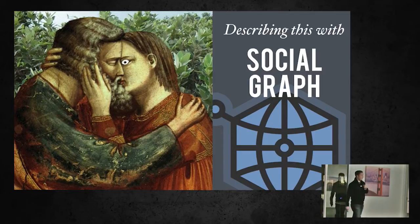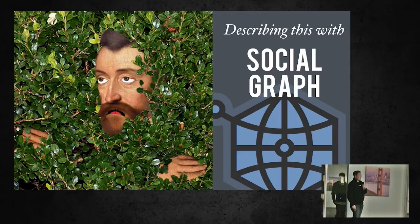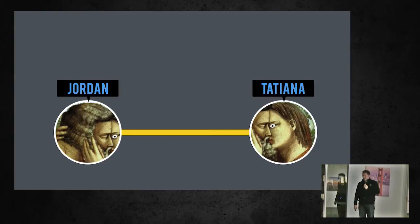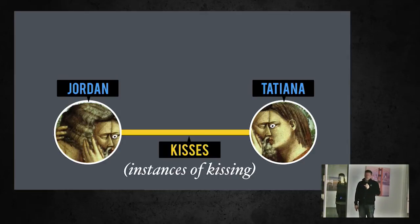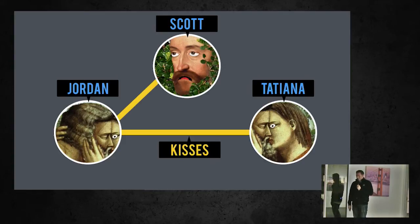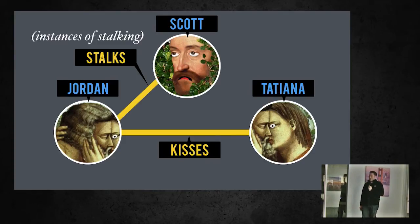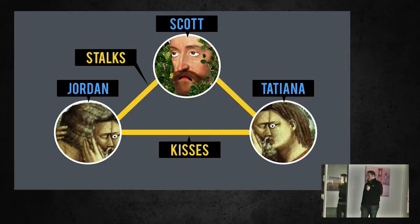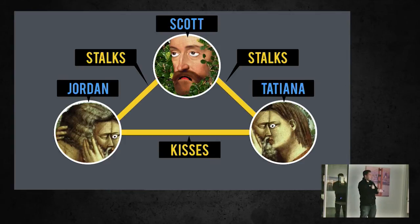Describing this gif with a social graph: we create a user node — we'll call him Jordan. We'll create another node for this lady — we'll call her Tatiana. The relationship between these two is that they're kissing. Jordan could be kissing some other person, represented by another instance of the kisses edge. We've also got Scott, who has a relationship with Jordan — he's stalking him. Scott is also stalking Tatiana. There's the relationship between two different nodes using the same edge type.